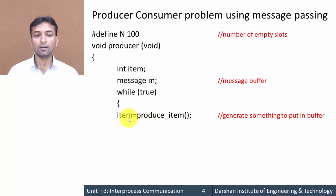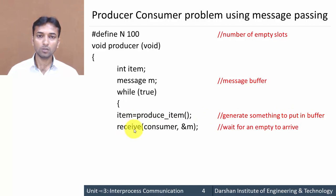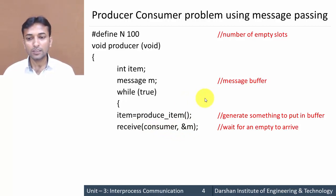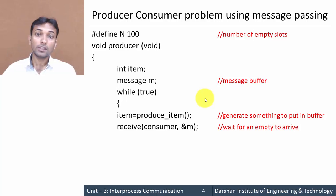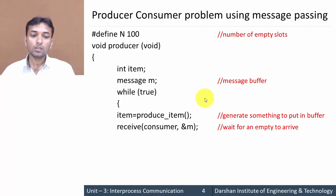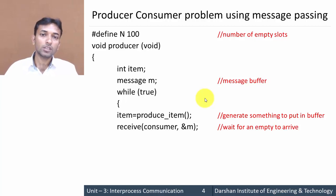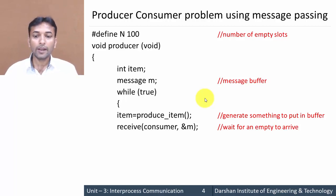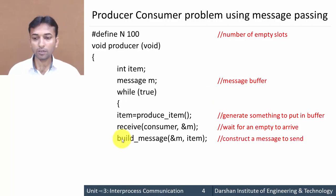Then 'receive(consumer, &m)' — the producer receives an empty slot from the consumer. Whatever item was produced is already in the item variable, but that data needs to be inserted into an empty slot received from the consumer. So the producer receives an empty slot from the consumer to insert data into it. Then 'build_message(&m, item)' — the producer constructs a message to send to the consumer.